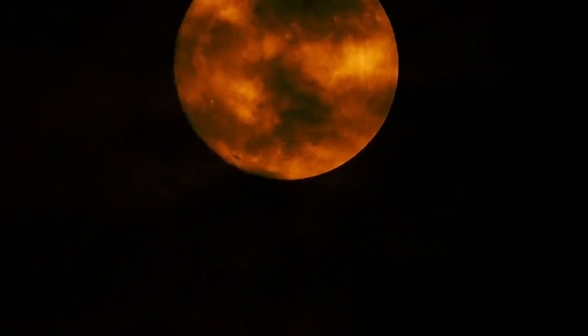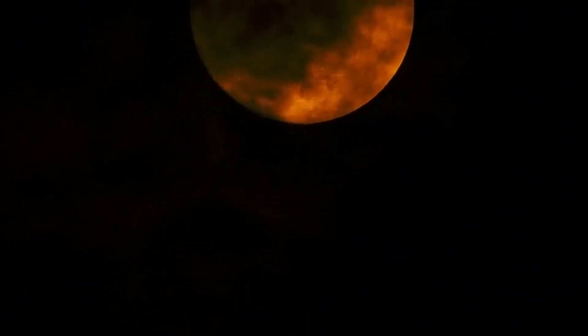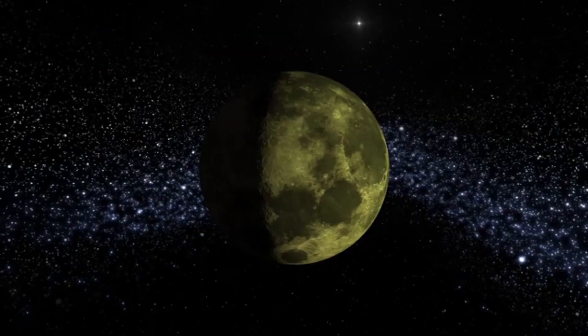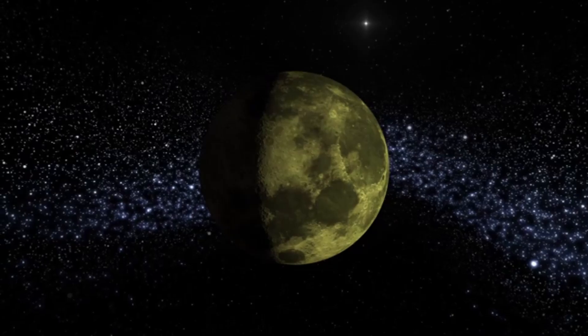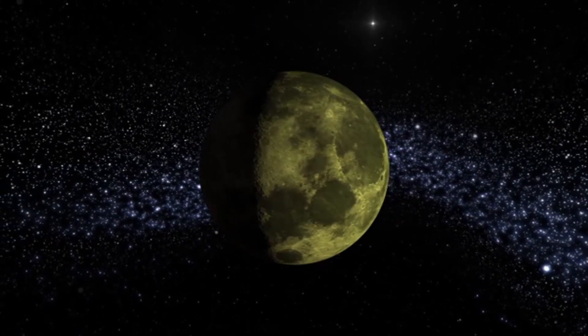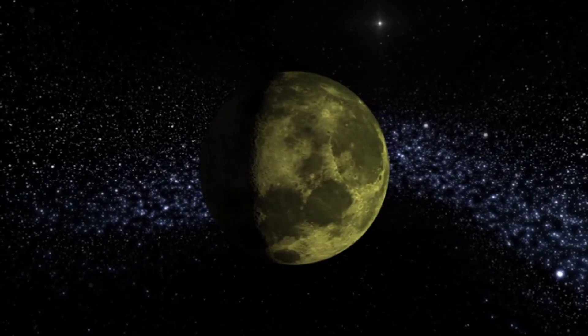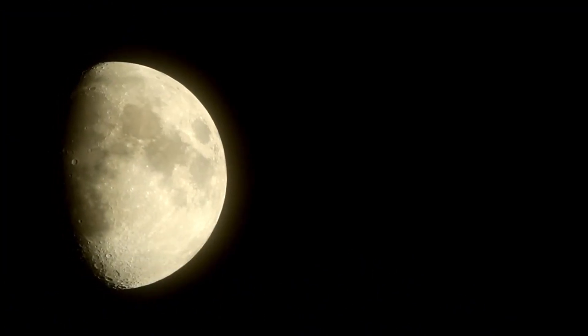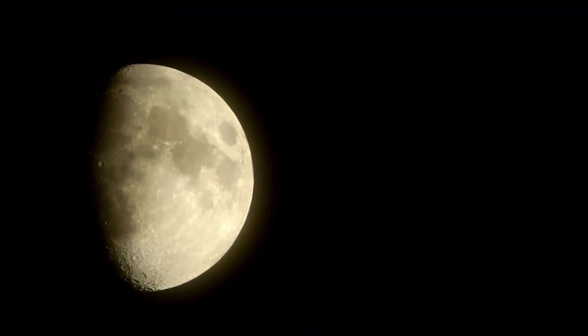The JWST's 6.5-meter-wide primary mirror is one of its most noteworthy features, tremendously surpassing the Hubble Space Telescope, which has been a fundamental tool for space research over the past few decades. With a mirror that is over twice as large,